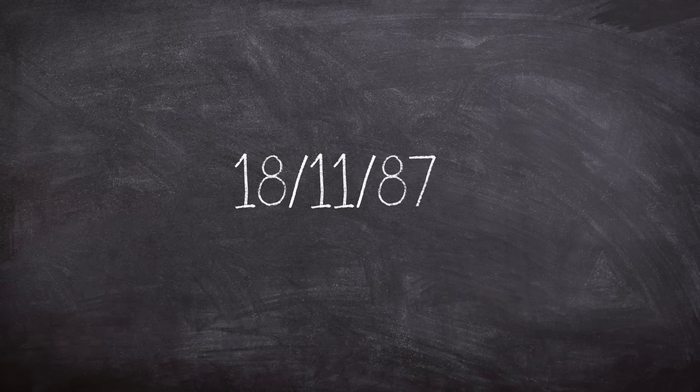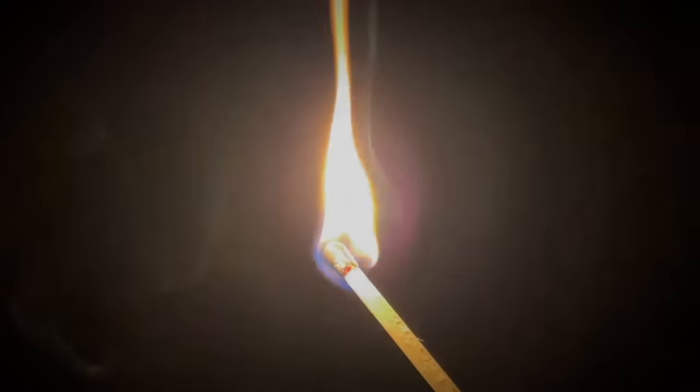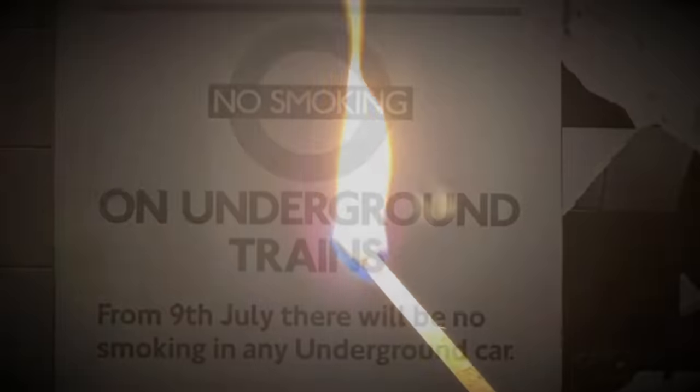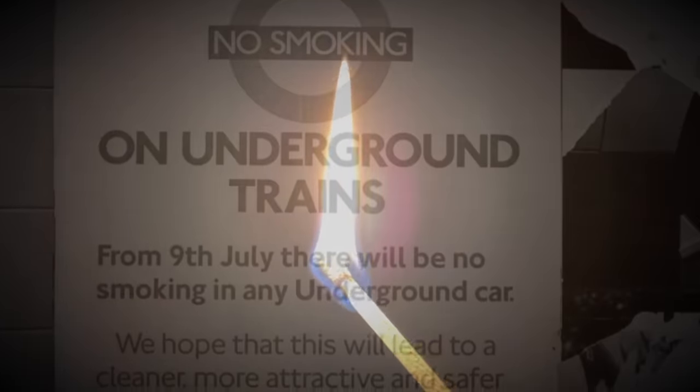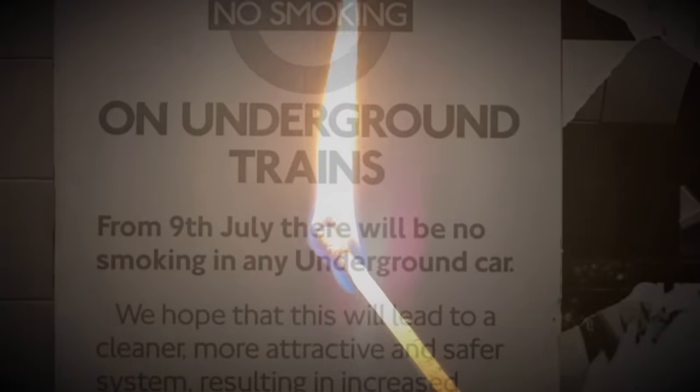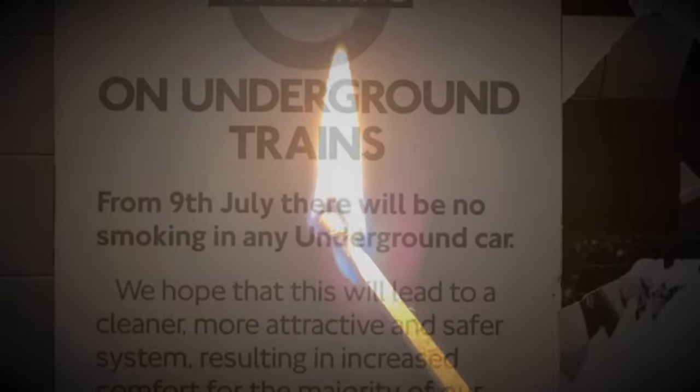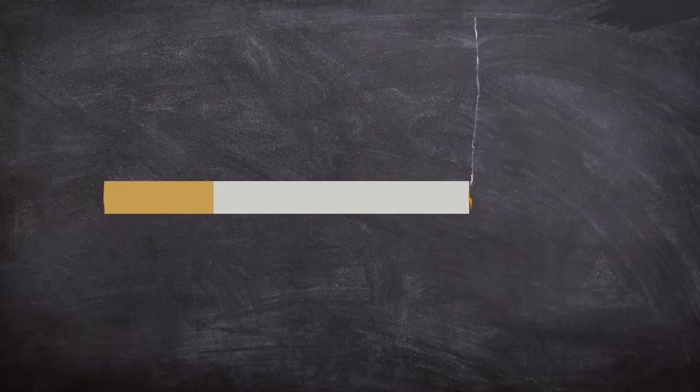It is the 18th of November 1987 and a traveller lights a cigarette with a match as they travel on the escalators at King's Cross station. Smoking on the underground has been illegal since 1985 but many openly flaunt the law and make use of the cover of the escalators of King's Cross tube station to light a cigarette before going out into the evening air.